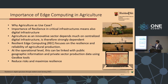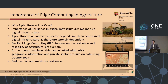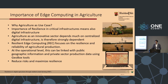The importance of edge computing in agriculture — why agriculture as a use case? Agriculture is a good use case for edge computing because it is critical infrastructure. Agriculture depends much on centralized infrastructure and cloud computing. Resilient edge computing focuses on the resilience and reliability of agricultural production. At the operational level, this can be linked with public geographic information and private sector production data using GeoBox tools and the GeoBox app.